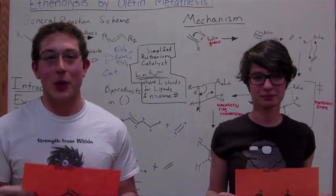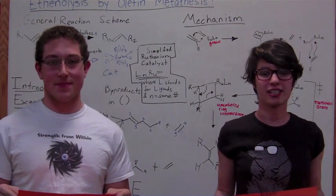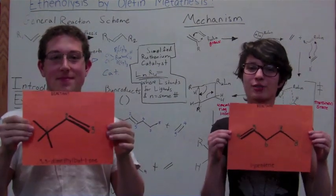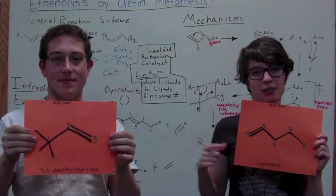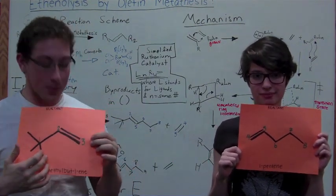Hello, today we're going to be talking about olefin cross-metathesis. We're going to be talking about a special type of metathesis called ethnolysis, which includes two reactants that both have terminal alkenes. Notice how the numbering is different from IUPAC here to make the reaction seem more simple.